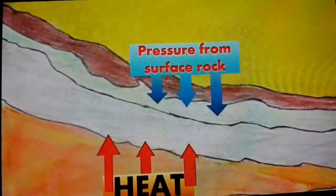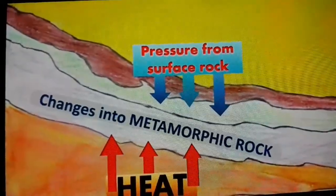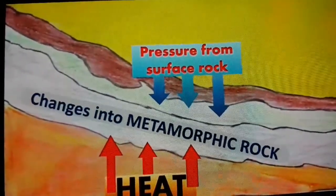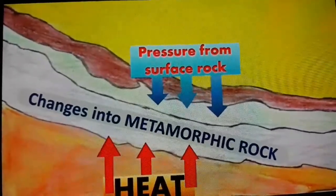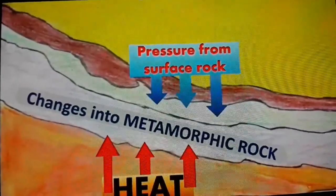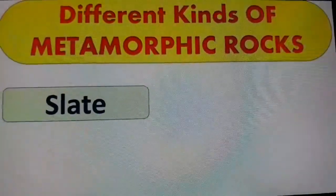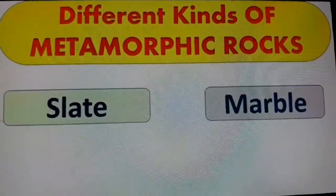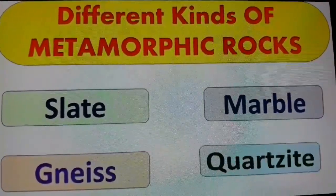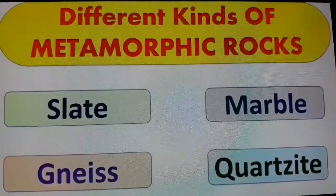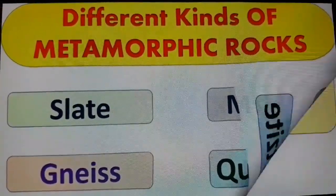Understood, children? Definitely, because of igneous and sedimentary rocks, metamorphic rocks are formed. Because of high temperature and the pressure of so many sediments, metamorphic rocks are formed. There are many types of metamorphic rocks — marble, quartzite, slate, and gneiss. So many metamorphic rocks are there.